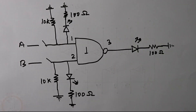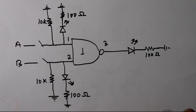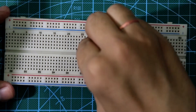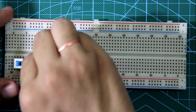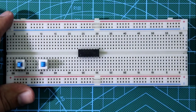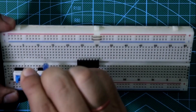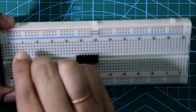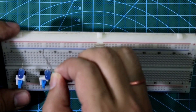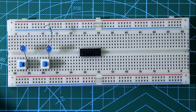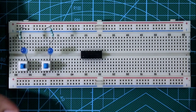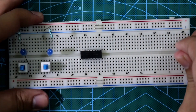Now our circuit is complete. Let's connect it on the breadboard. Place the IC, then input switch 1 and input switch 2, one input LED for each input, connect 100 ohm resistors with the cathodes of the LEDs to ground, and then connect the output LED.